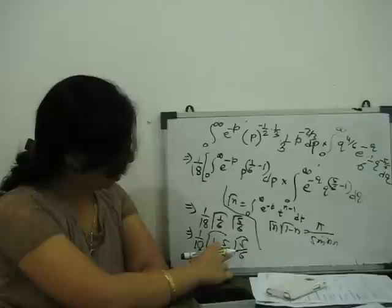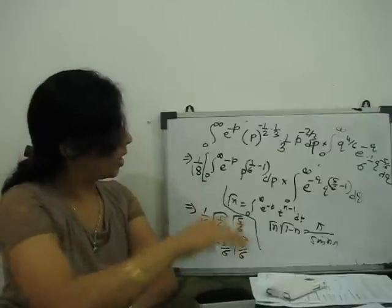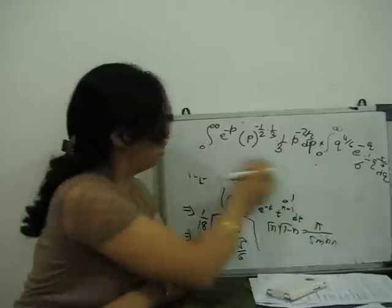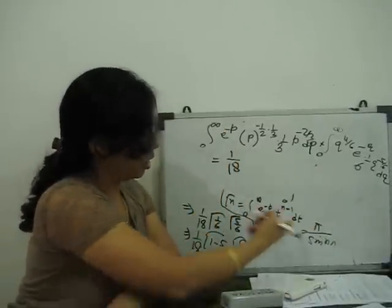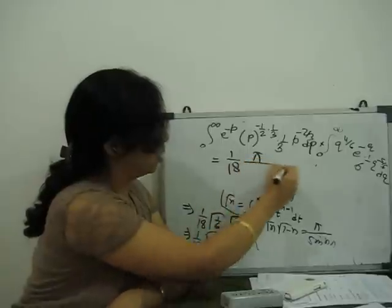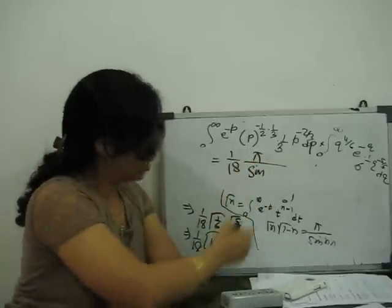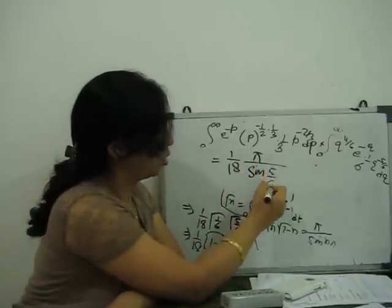Here our n is 5 by 6. So this integral gives the value 1 by 18 times pi upon sine of 5 by 6 pi.